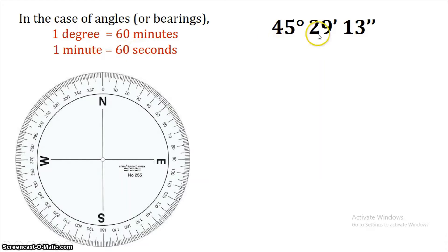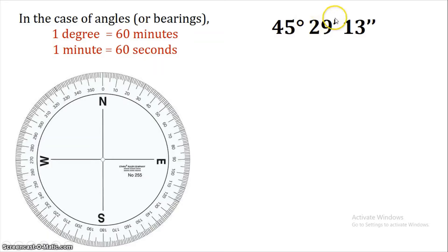Now we will denote the value. For example, the notation is 45 degrees, 29 minutes, 13 seconds. So we write angles in this format: 45° 29' 13". In such a way, we will calculate the angles using this timing format.